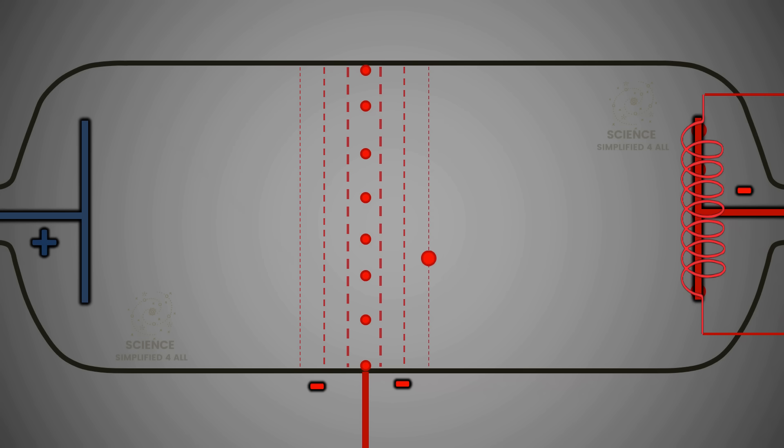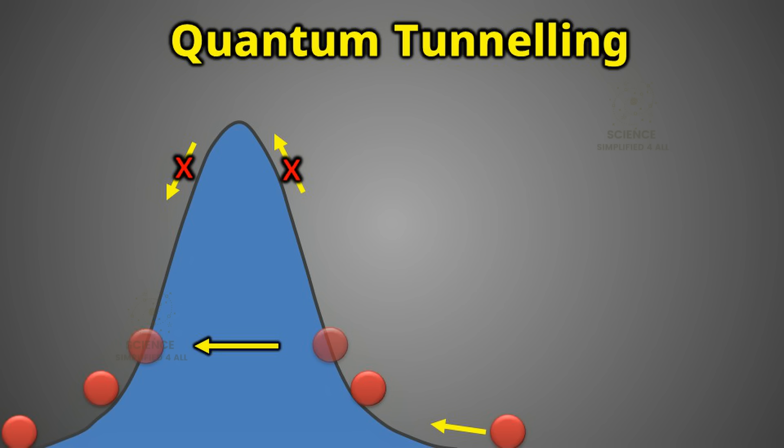However, in the quantum world, something truly strange happens. Even if none of the electrons have enough energy to cross the barrier, a few of them still appear on the other side. And here is the most astonishing part. They are never seen passing through the barrier in any classical way. It is as if they simply vanish on one side and reappear on the other, continuing their journey toward the collector. This phenomenon, where a particle crosses a barrier without having the energy to overcome it, is known as quantum tunneling.